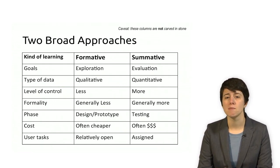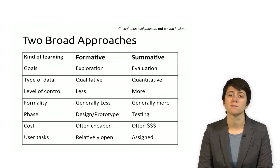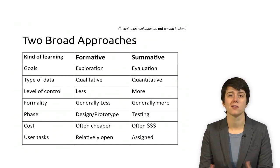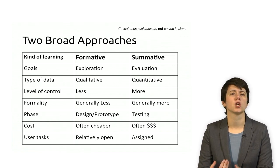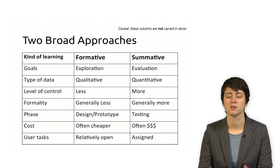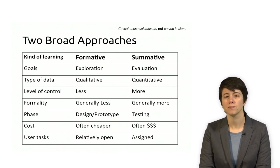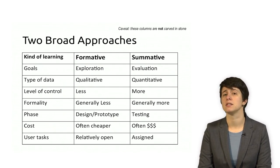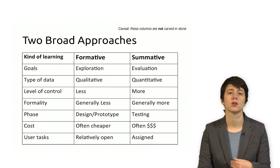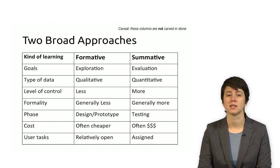In contrast, the summative evaluation is really focused on evaluating or showing that your system works. It's much more quantitative because typically to show that something works better than another thing, you need to compare something directly, and that's frequently a number. You typically control what happens more because you really want to make sure you're comparing apples to apples. So you might want users to do the same tasks in two different systems. These studies are also generally more formal because you're trying to get that higher level of control and make sure that everybody's doing the same thing in each version of the study.